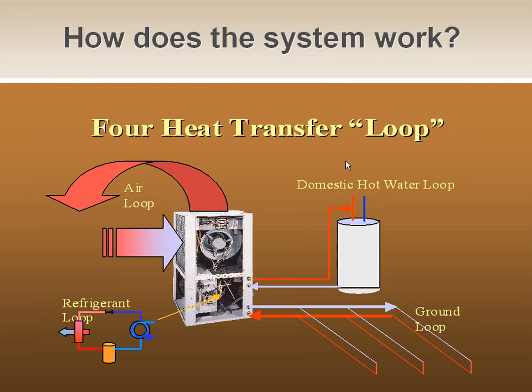Breaking down the components of a geothermal system — most people are surprised because a geothermal unit still includes a refrigerant loop. It's very similar to any other domestic forced air system or furnace/condensing unit combination. We're just rejecting heat to a ground water loop instead of outside. Most typical homes have a furnace and air conditioner where the AC rejects heat to the air; this system just rejects heat to the water. We have a closed ground water loop, a refrigerant circuit doing heat exchange, and we can use additional energy rejected to the ground during summer to heat domestic hot water — the fourth component of the geothermal system.